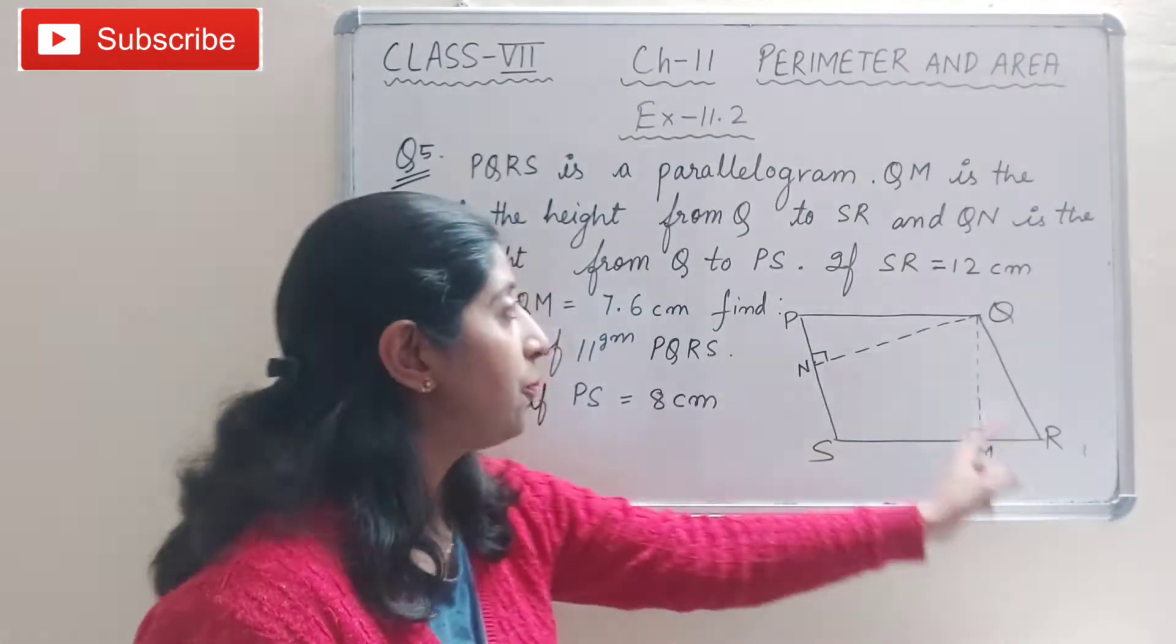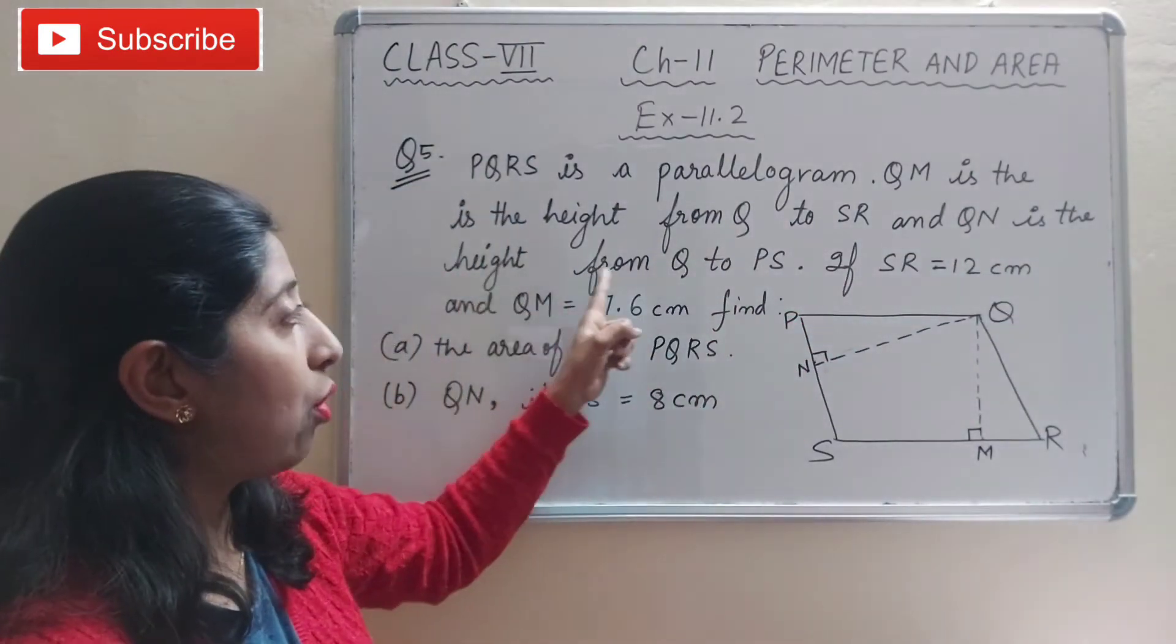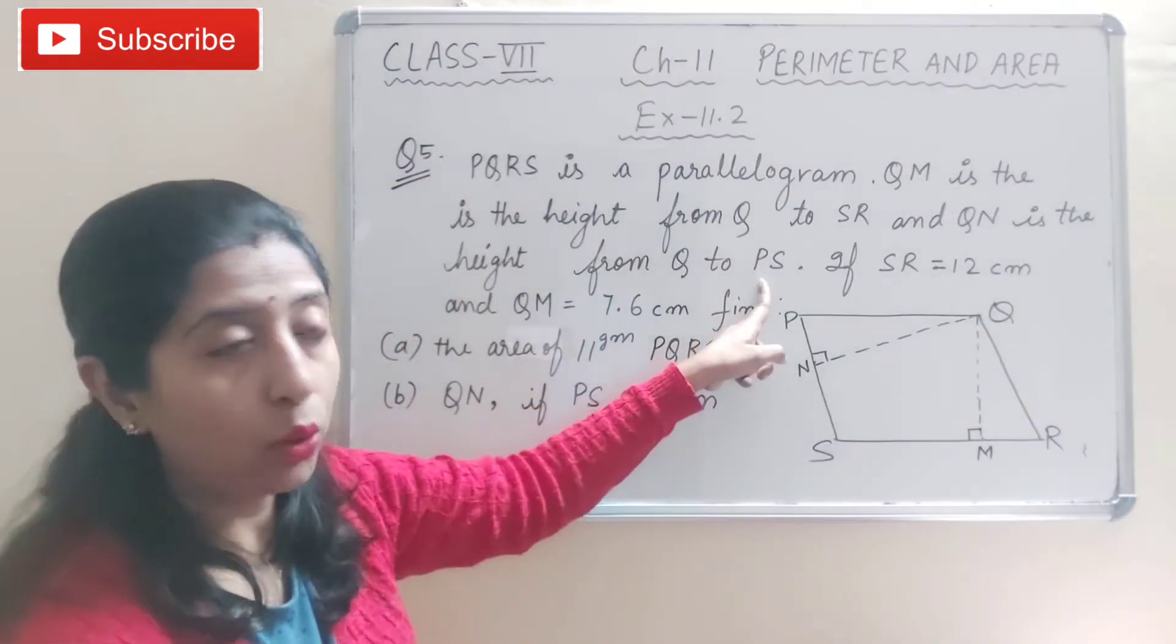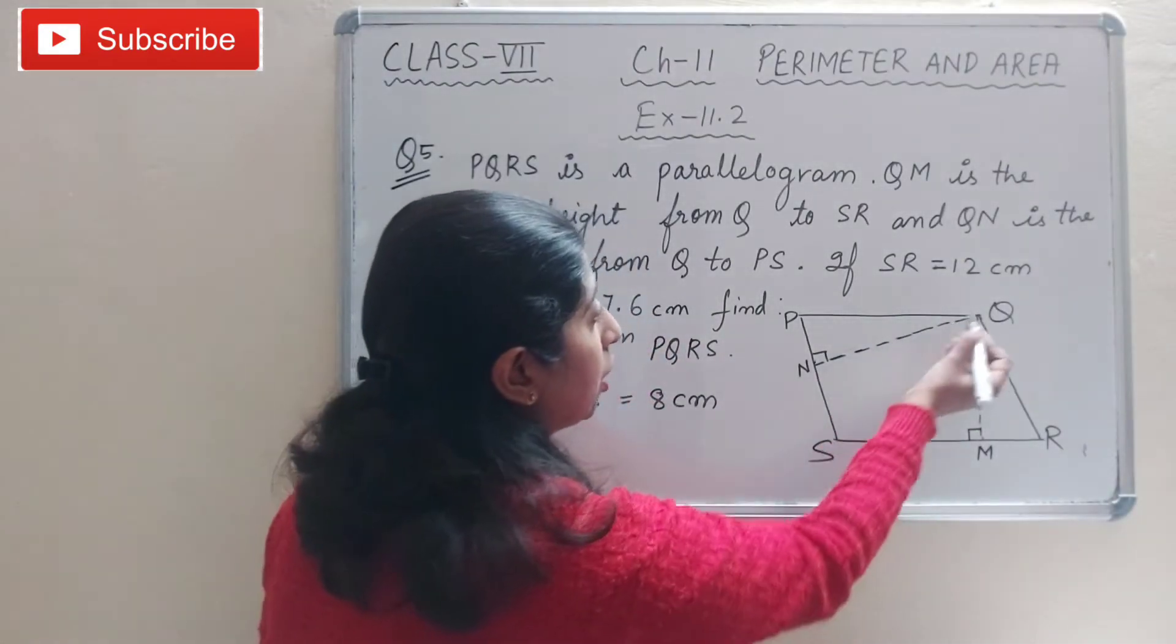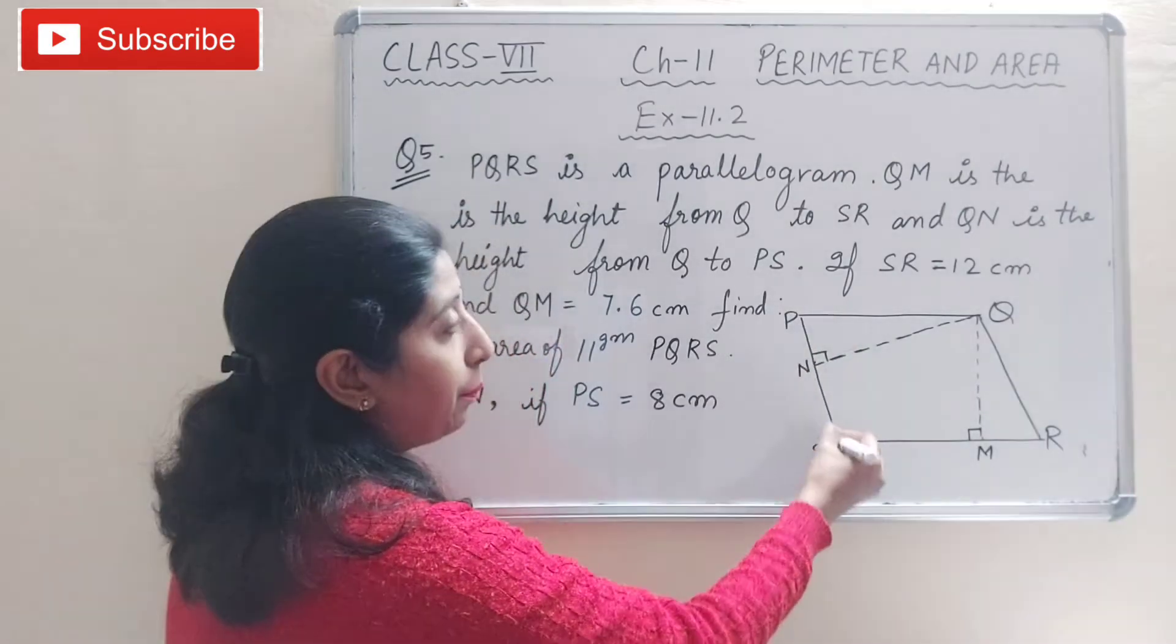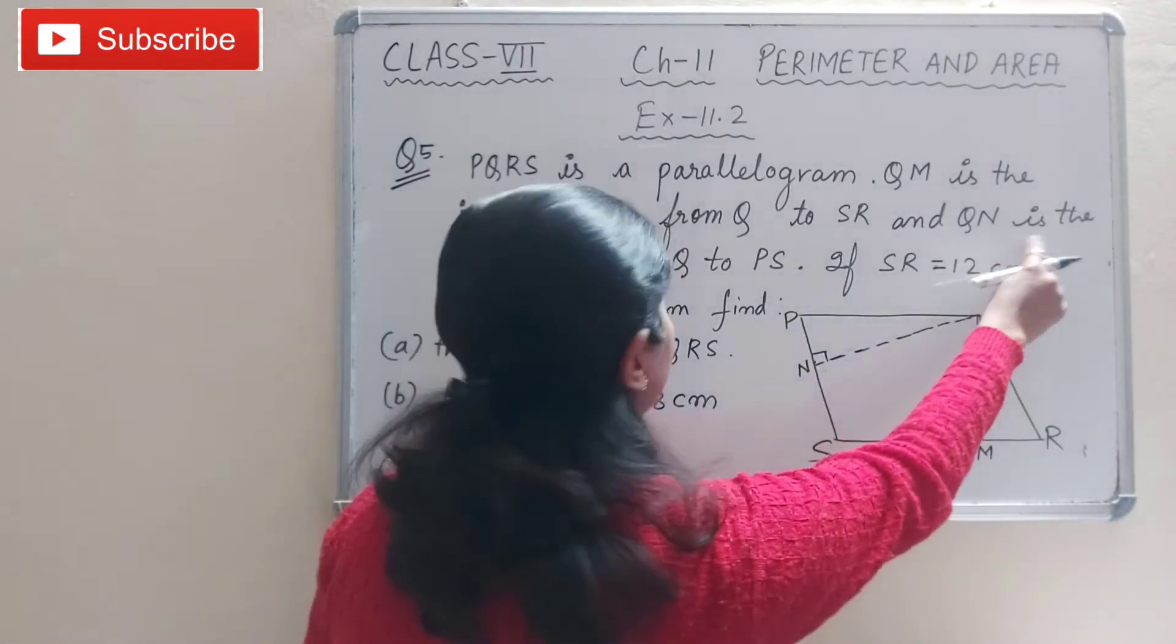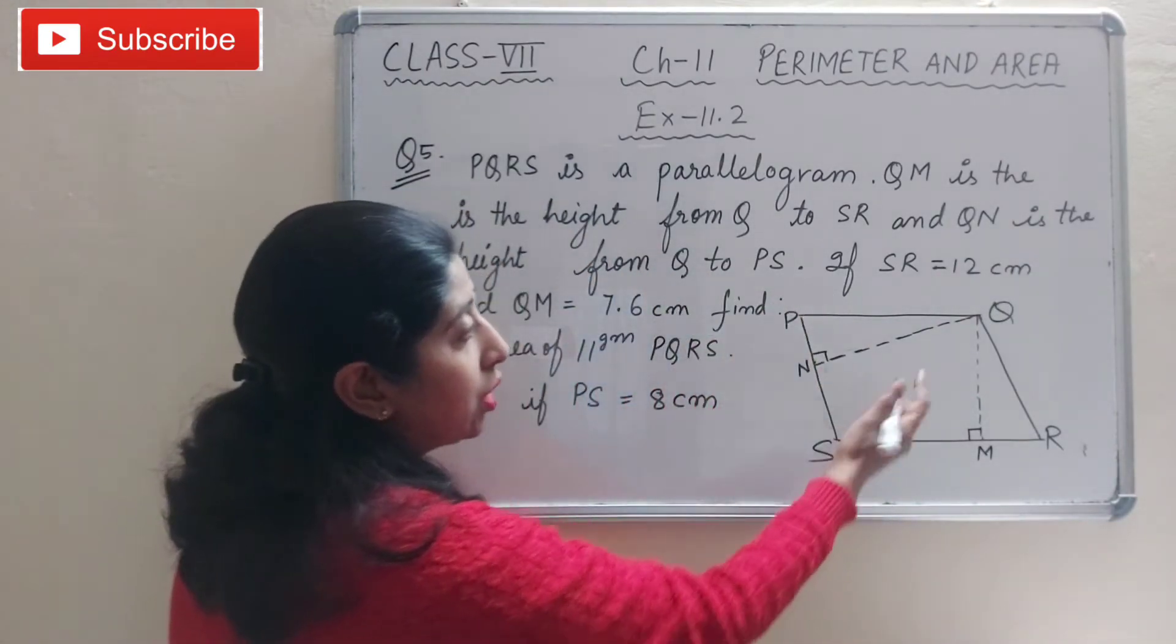Now see, QM is also the height from Q to PS. There is another perpendicular drawn here, QN, which is perpendicular from Q to PS.